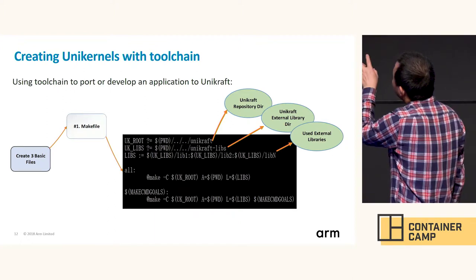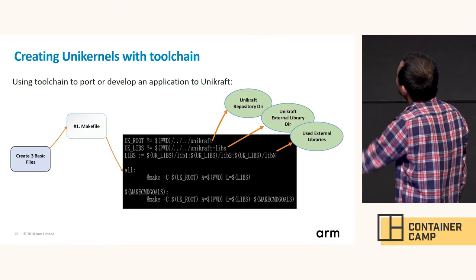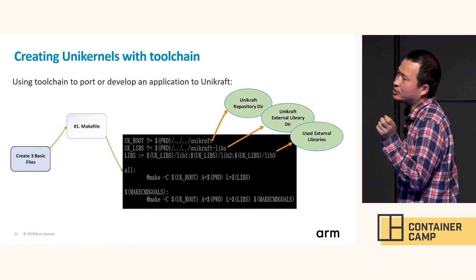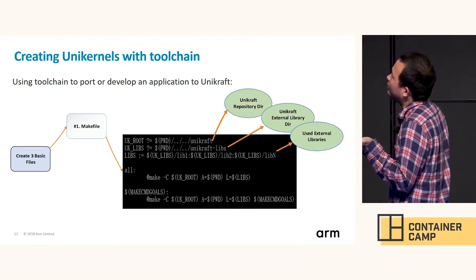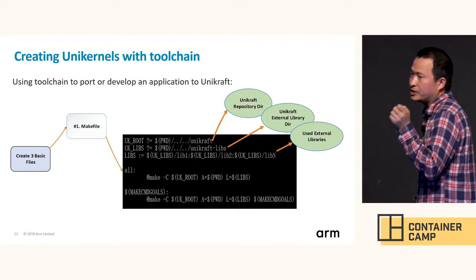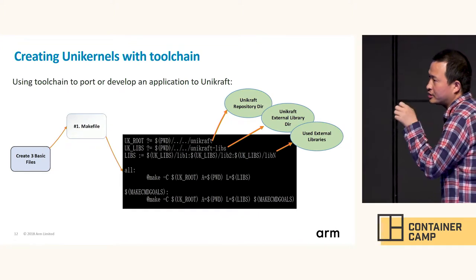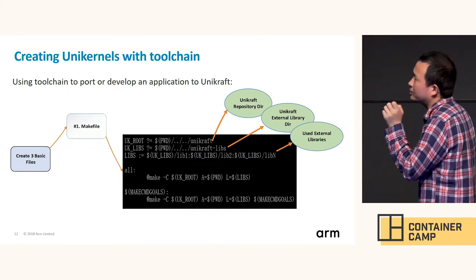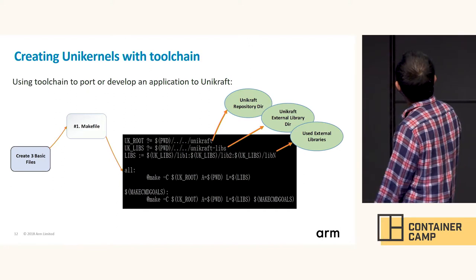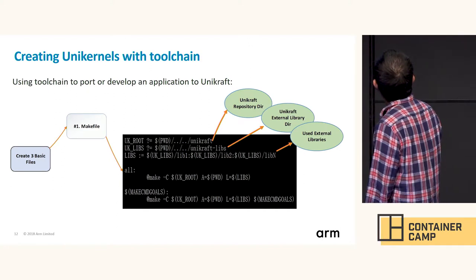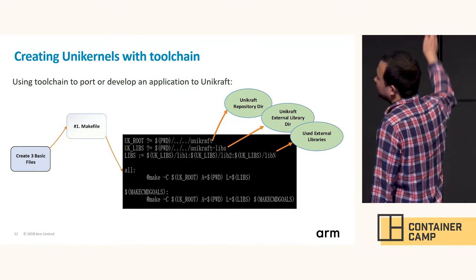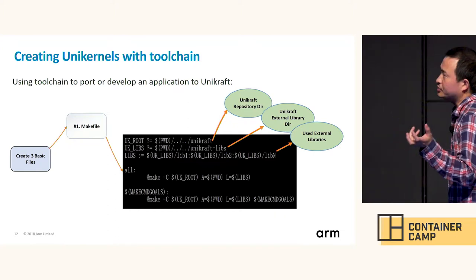The makefile contains no more than the following: first, we point to the location of the UniKraft main repository, just like pointing to a Linux kernel source tree. Second is the external libraries folder. Third is the libraries that will be used in your application.